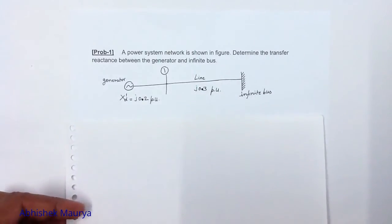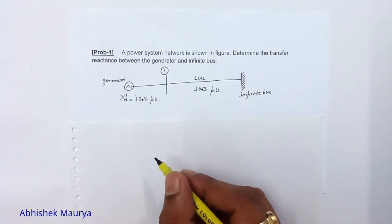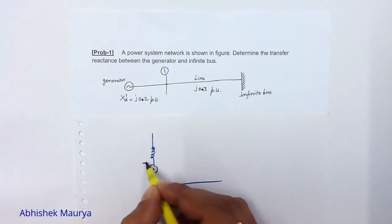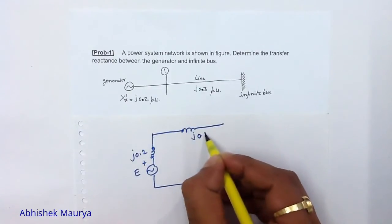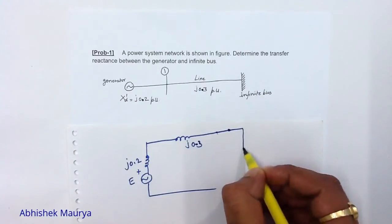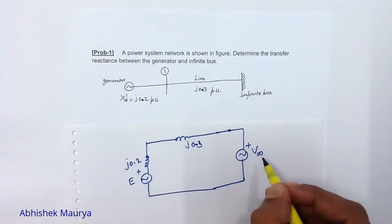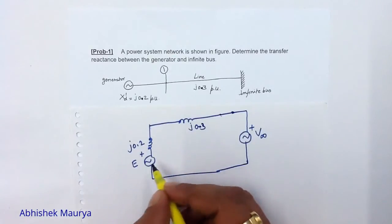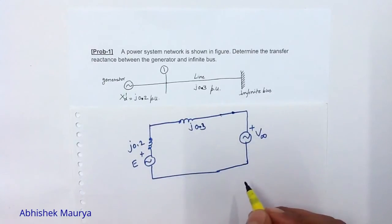In problem number one we want to find out the transfer reactance between the generator and infinite bus. To find it, we will first make the per unit reactance diagram. The generator reactance is J0.2, the transmission line reactance is J0.3, and the infinite bus is connected at the end of the transmission line with voltage V infinity. The transfer reactance is defined as the total reactance between the internal EMF of the generator and the infinite bus voltage.